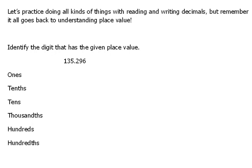Okay, here it says identify the digit that has the given place value. So here we have this decimal number that they've given us and they want us to identify what is in the ones position. Well, the ones position, again knowing our place value, is one place to the left of the decimal. So there is a five in that ones position.